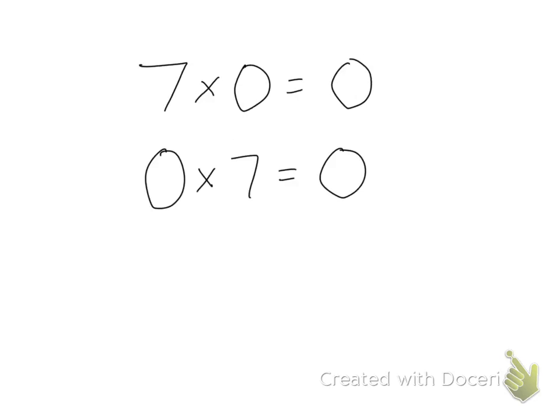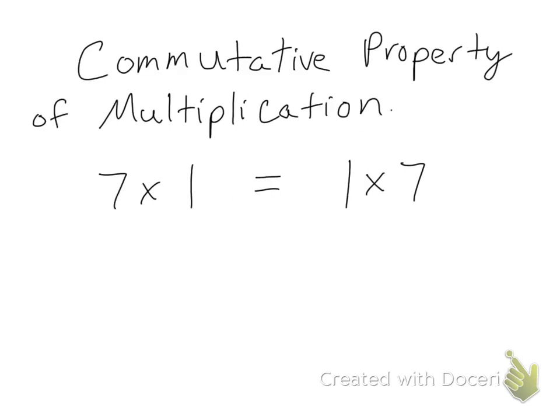So here I have 7 times 0 equals 0, and 0 times 7 equals 0. If you notice, these two problems have the same factors and product. The only difference is that I switch the numbers in between the two problems. This is called the commutative property of multiplication.